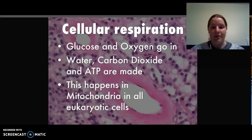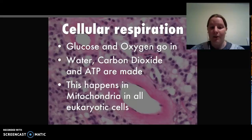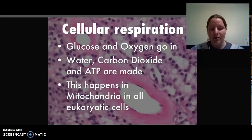Next we have cellular respiration. This is where glucose — the sugar — and oxygen go in, and water, carbon dioxide, and ATP are made. We really like this ATP because it's what makes our cells do their jobs. From our muscles to our brain cells, ATP is used in all of them.